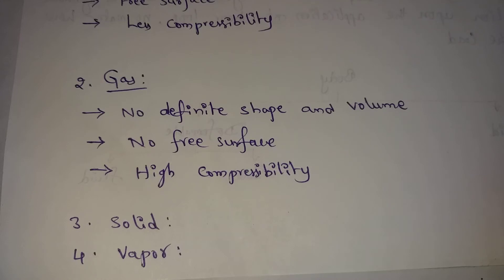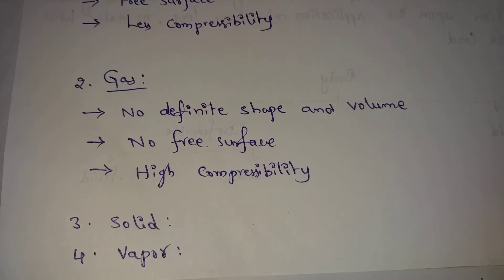Solids have a definite shape and volume. For example, a stone — the stone has a definite volume and shape.